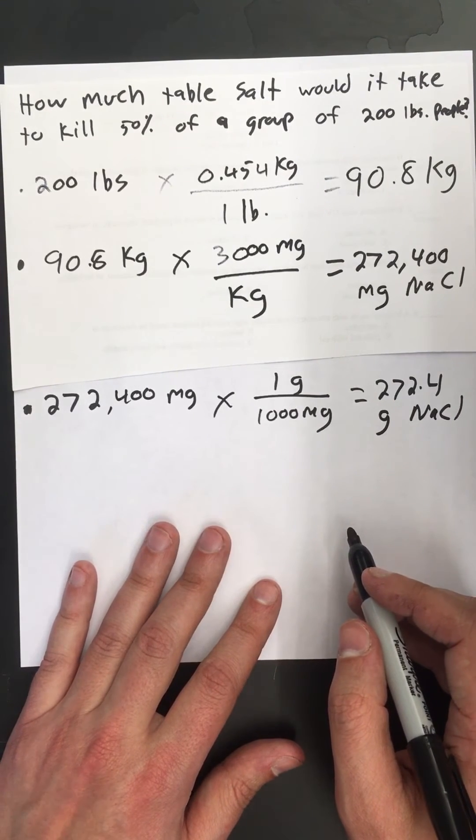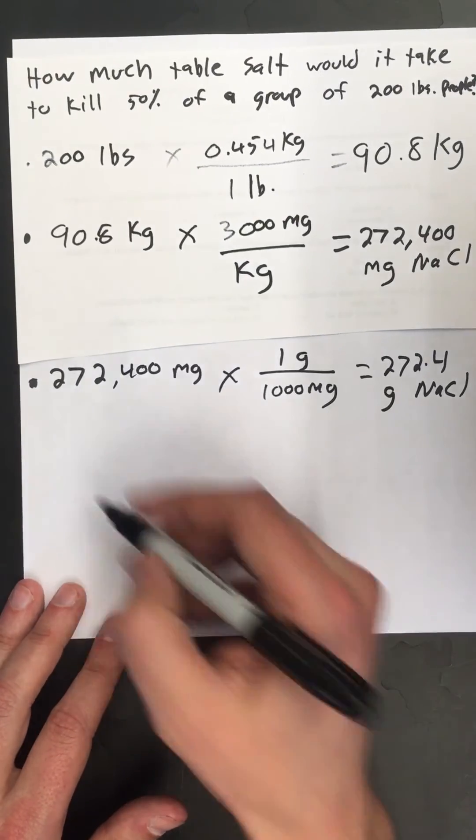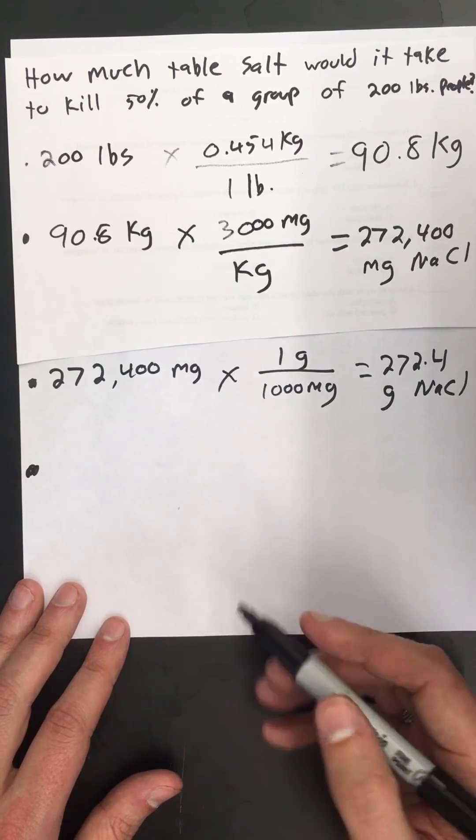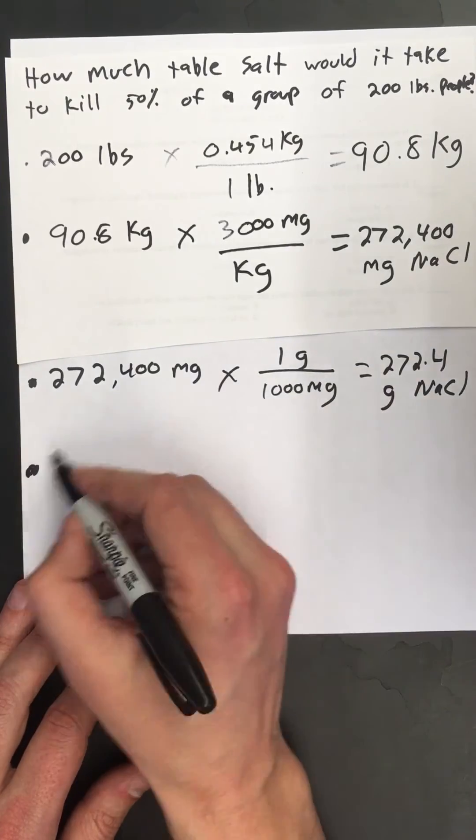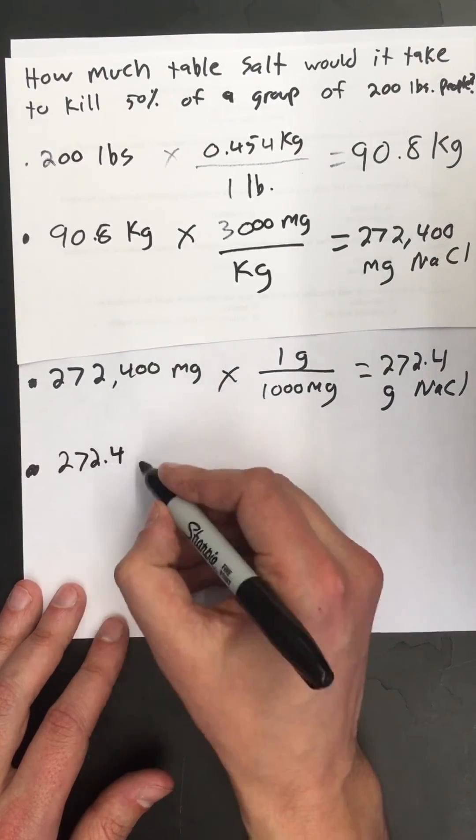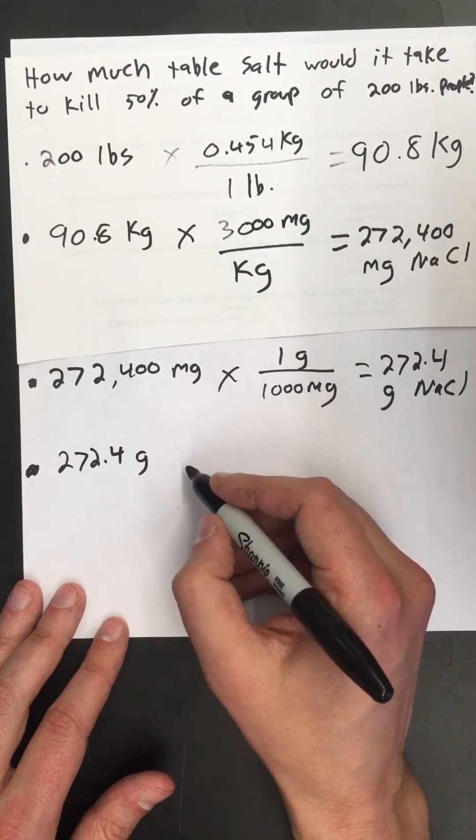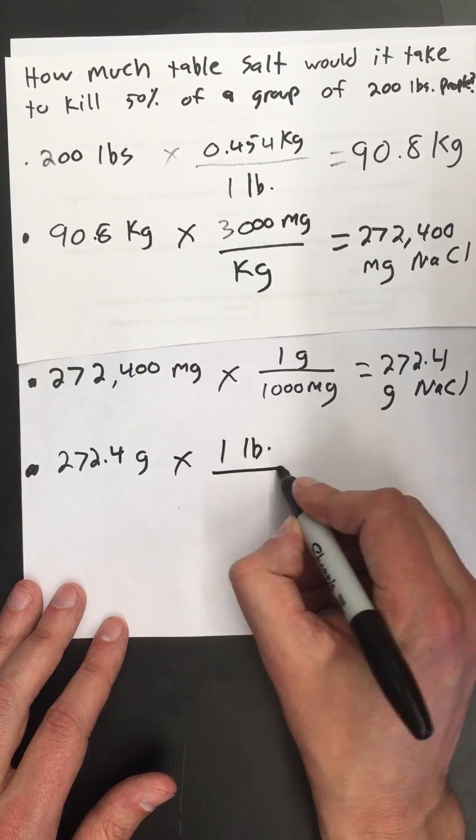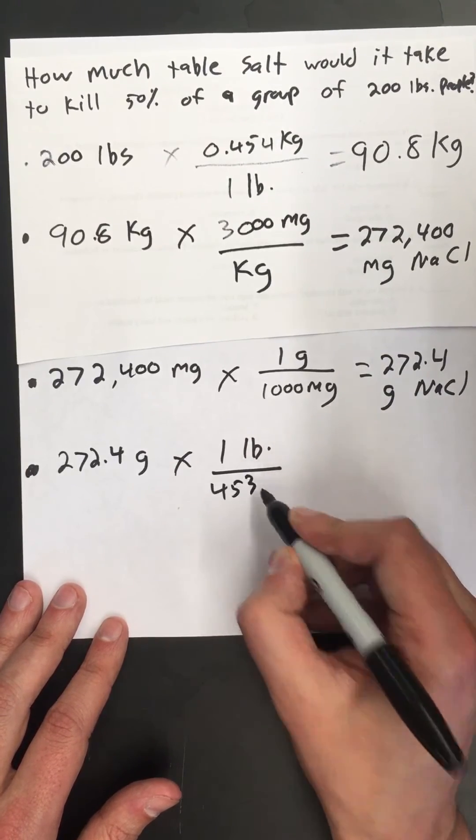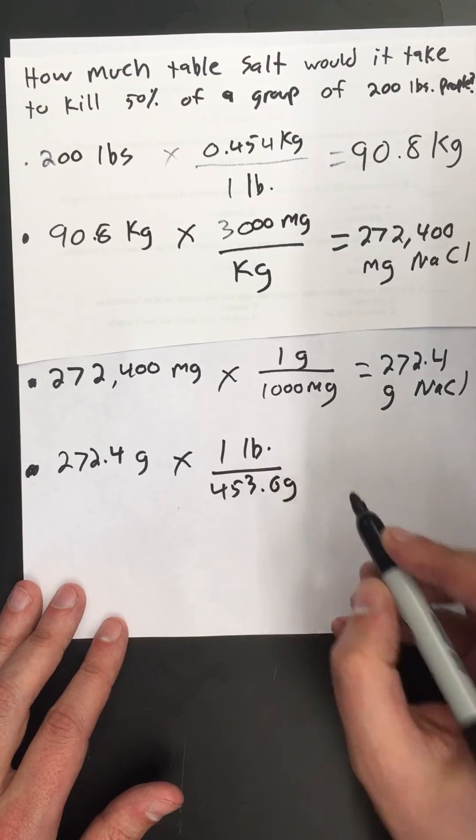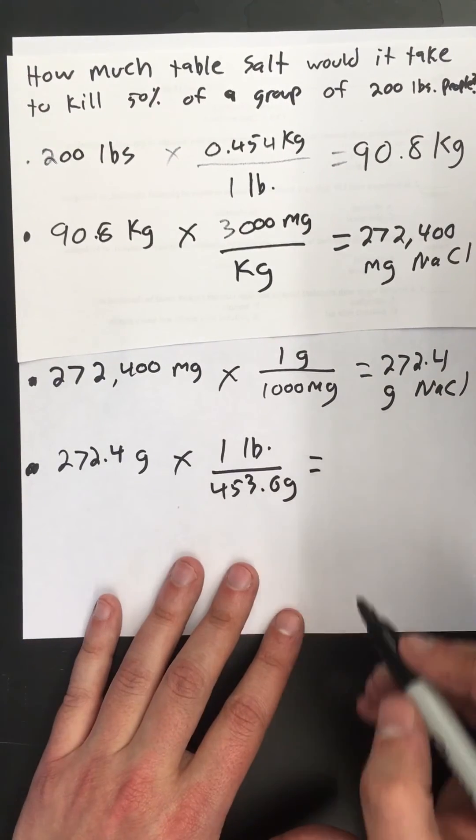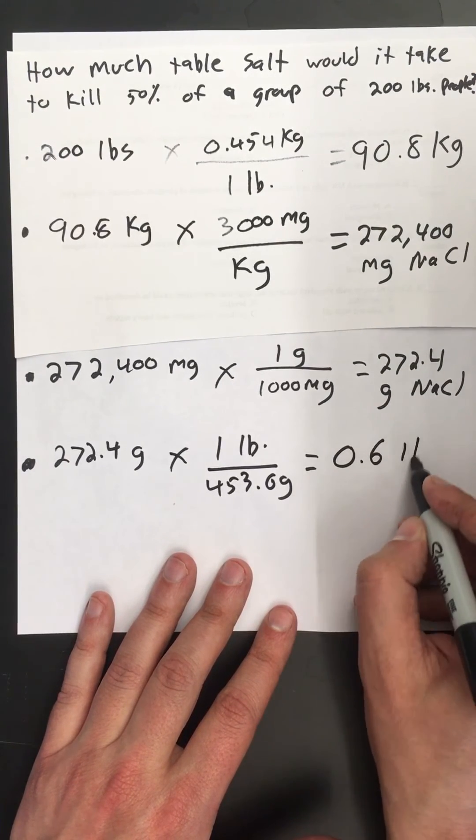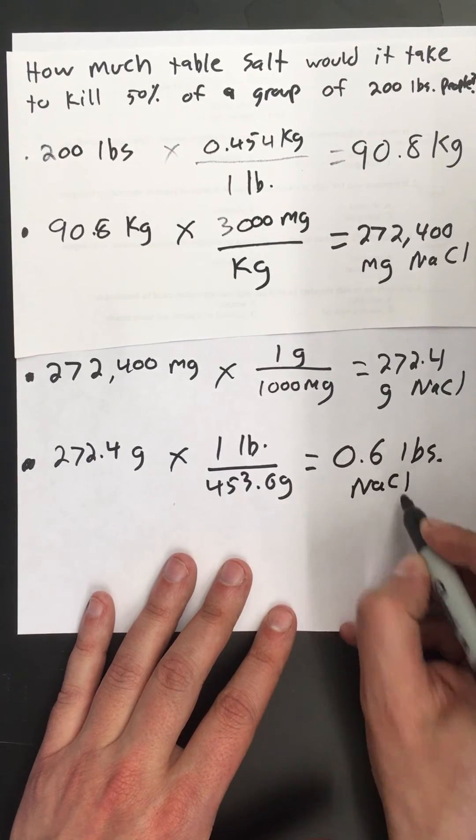Okay so that's a little more familiar but let's keep going and see if we can get back into pounds. So I'm going to take 272.4 grams of table salt and I can convert that into pounds by saying that one pound is equal to 453.6 grams.